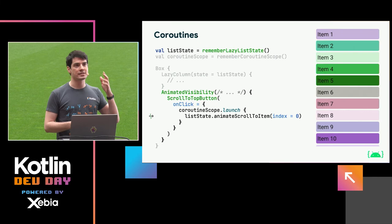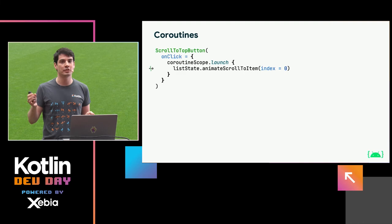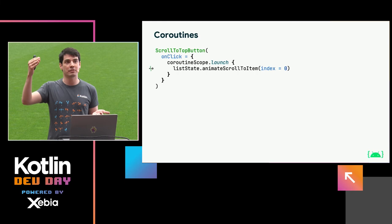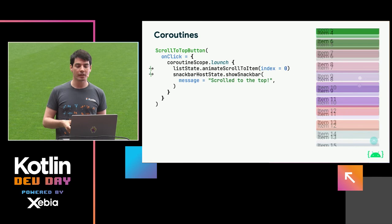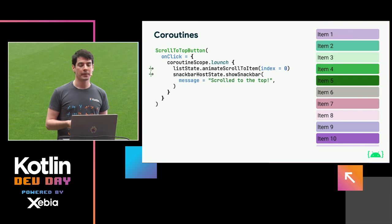Why is this exciting? Because animateScrollToItem is a suspending function, which means that if we want to do something after the animation has completed, we can just write sequential code on the next line and it will happen after the animation. For example, we could make a call to the SnackBar APIs, which display a message on the bottom of the screen. It would appear after the animation is completed and eventually timeout on its own. The SnackBar APIs also allow you to accept some interaction — you can add an action label to it.